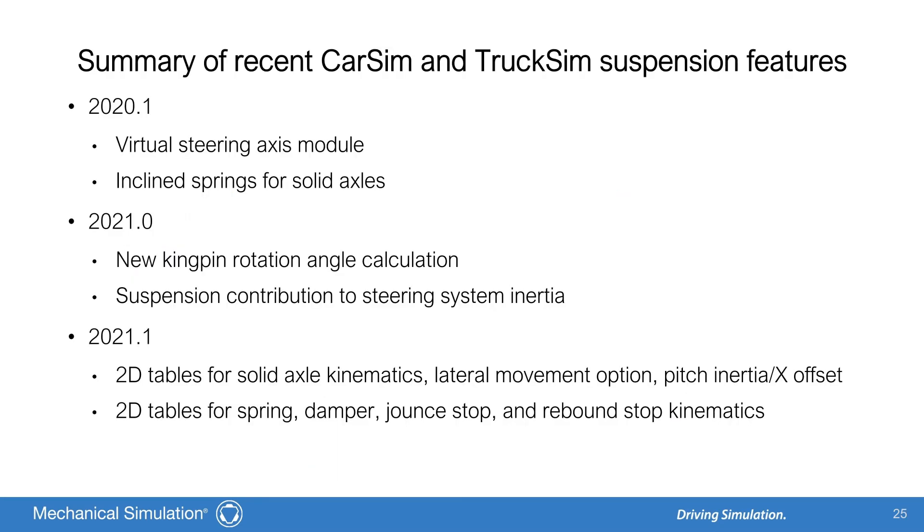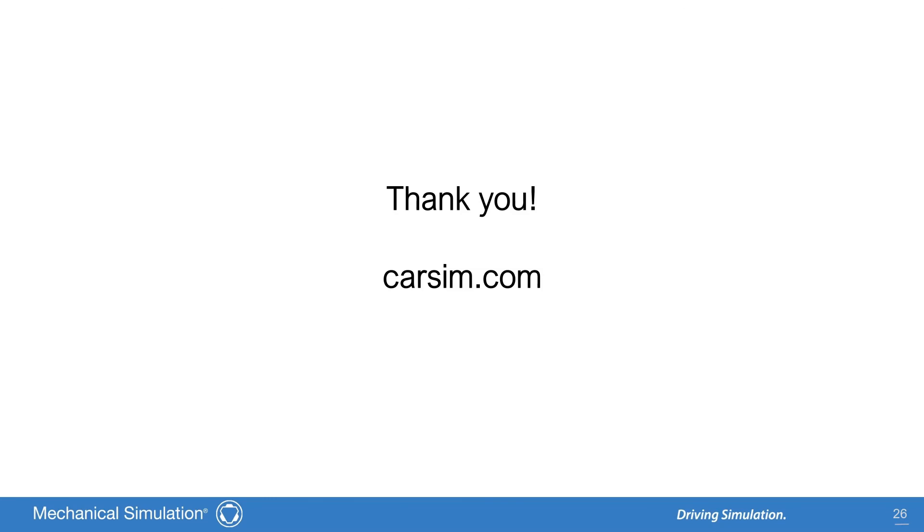Well, I've now got you up to speed with the latest improvements to the CarSim and TruckSim suspensions. To summarize, we covered the virtual steering axis and solid axle incline spring option from 2020.1, the kingpin rotation and steering system inertia from 2021.0, and finally, the new 2D suspension tables for 2021.1. Thank you for your attention. For more information, check out the other videos on our Mechanical Simulation YouTube channel, and our website CarSim.com.